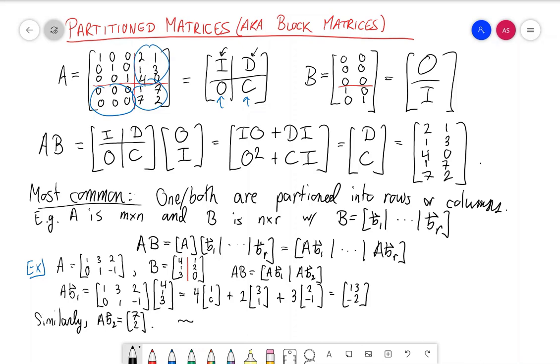And therefore, we conclude that A times B is equal to [13 7; -2 2]. And I included the vertical bar just to emphasize that we got this by using block multiplication.